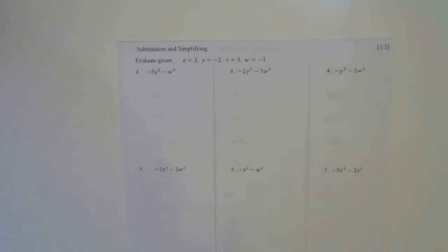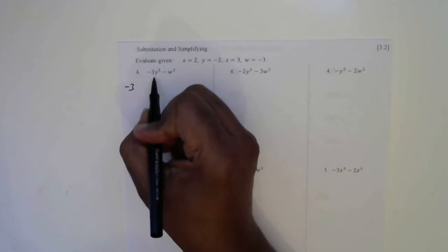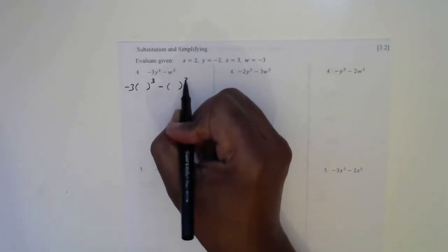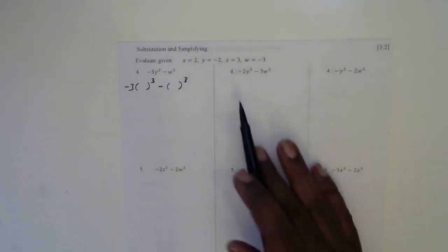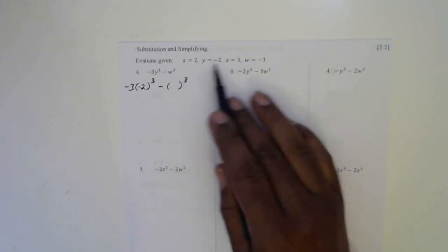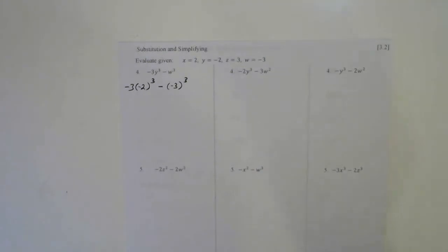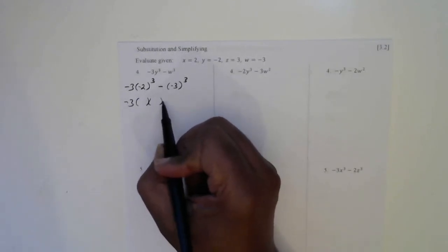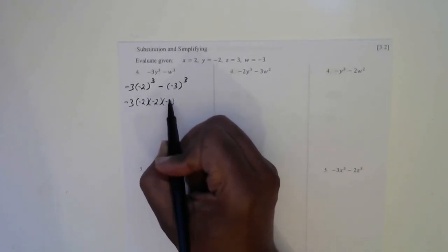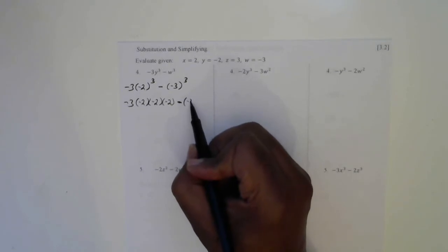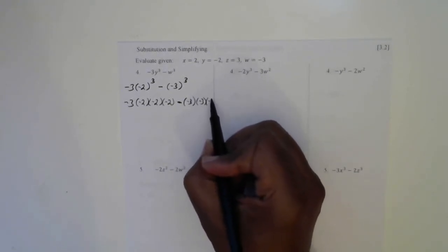Let's go to page 2. On page 2, we have a negative 3 followed by a y to the third power, so we'll put a parenthesis here to the third power, minus a w, so this will be minus a parenthesis with a third power. The y here is going to be a negative 2, so we'll put a negative 2 here. And the w was a negative 3, so we'll put a negative 3 here. Now let's expand — we have a negative 3, and we have to write this negative 2 three times. Let's write it in three times — negative 2, negative 2, and negative 2. Next, we have a negative here, and then this parenthesis negative 3 needs to be written three times.